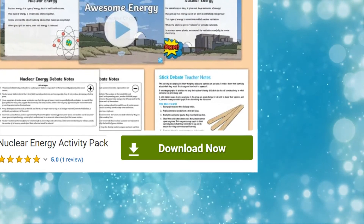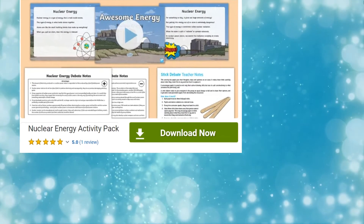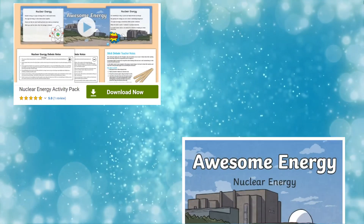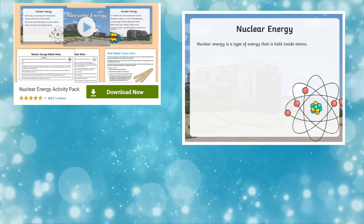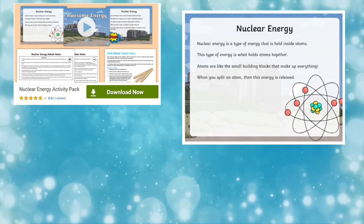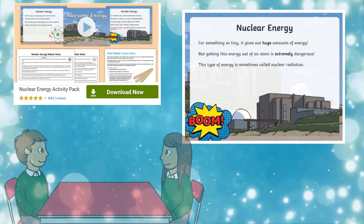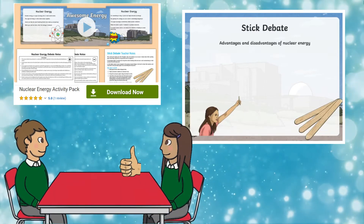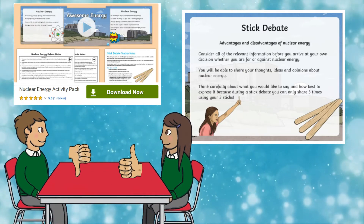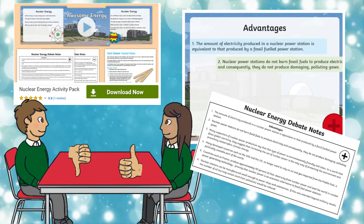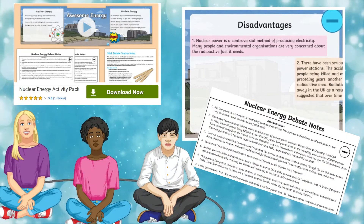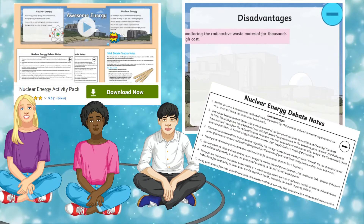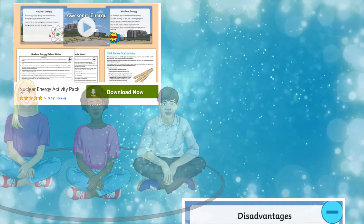Using our nuclear energy activity pack, you'll be able to let children make up their own minds on whether or not they approve of the use of nuclear energy. Start by showing your class the PowerPoint filled with useful information, advantages and disadvantages. From this point on, you can split the class into teams of those who approve of nuclear energy and those who do not. Using the notes provided, your class can then form their arguments and debate this. Why not arrange your class chairs in a circle for the debate to engage in a whole class group discussion?